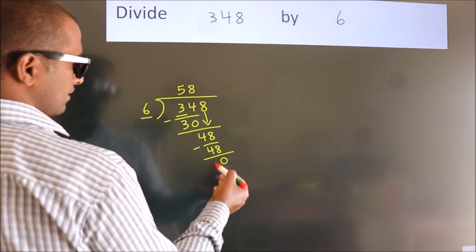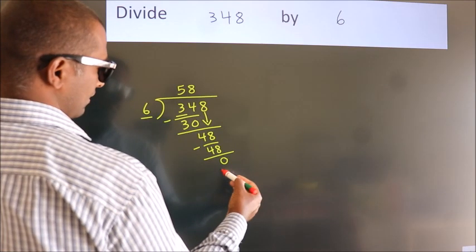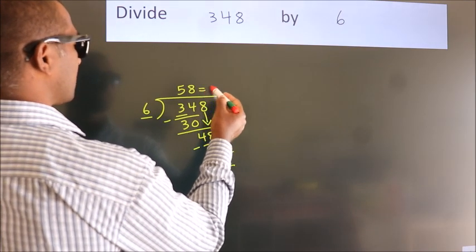After this, no more numbers to bring it down. And we got remainder 0. So this is our quotient.